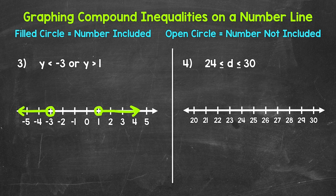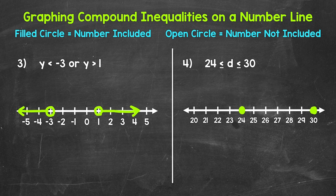Let's move on to number 4, where we have d is greater than or equal to 24 and less than or equal to 30. This is an AND compound inequality — remember, when we have a compound inequality involving AND, it can be written without AND. Now 24 is included, so we need a filled circle at 24. And d is less than or equal to 30, so we put a filled circle at 30 as well — 30 is included. We want everything in between. That's our graph of d is greater than or equal to 24 and less than or equal to 30.